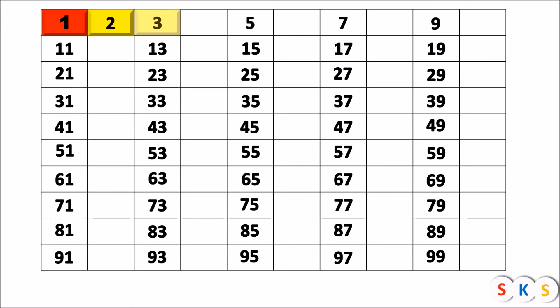Now here we have the next number 3. The number 3 is a prime number as it has exactly two factors, that is 1 and 3. So 3 is an example of a prime number. Now we will take out all the multiples of 3 from this table because they will have factors more than 2. For example, 9 is a multiple of 3. The factors of 9 are 1, 3 and 9. So 9 is not a prime.